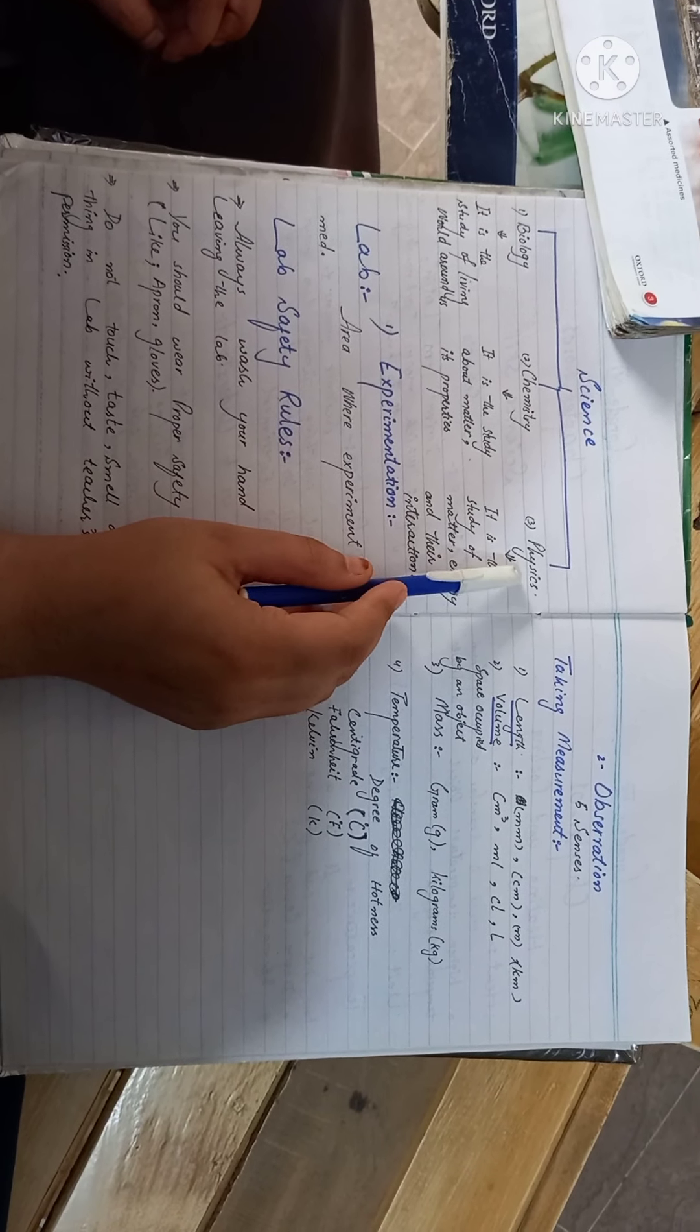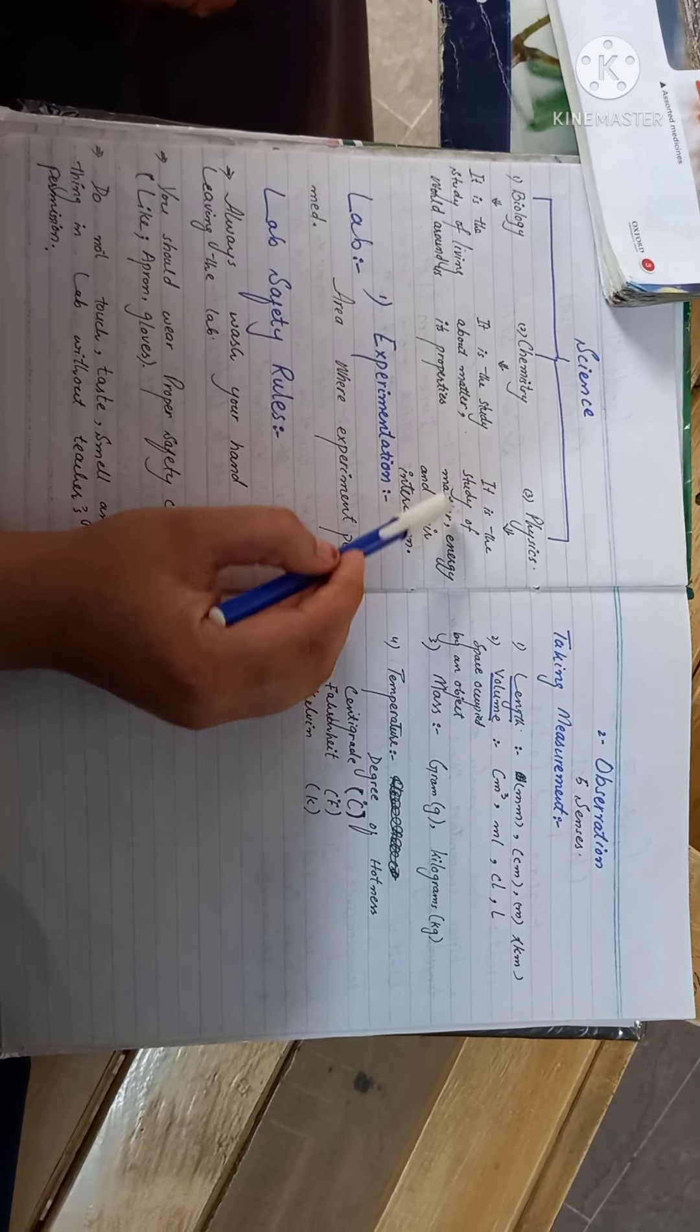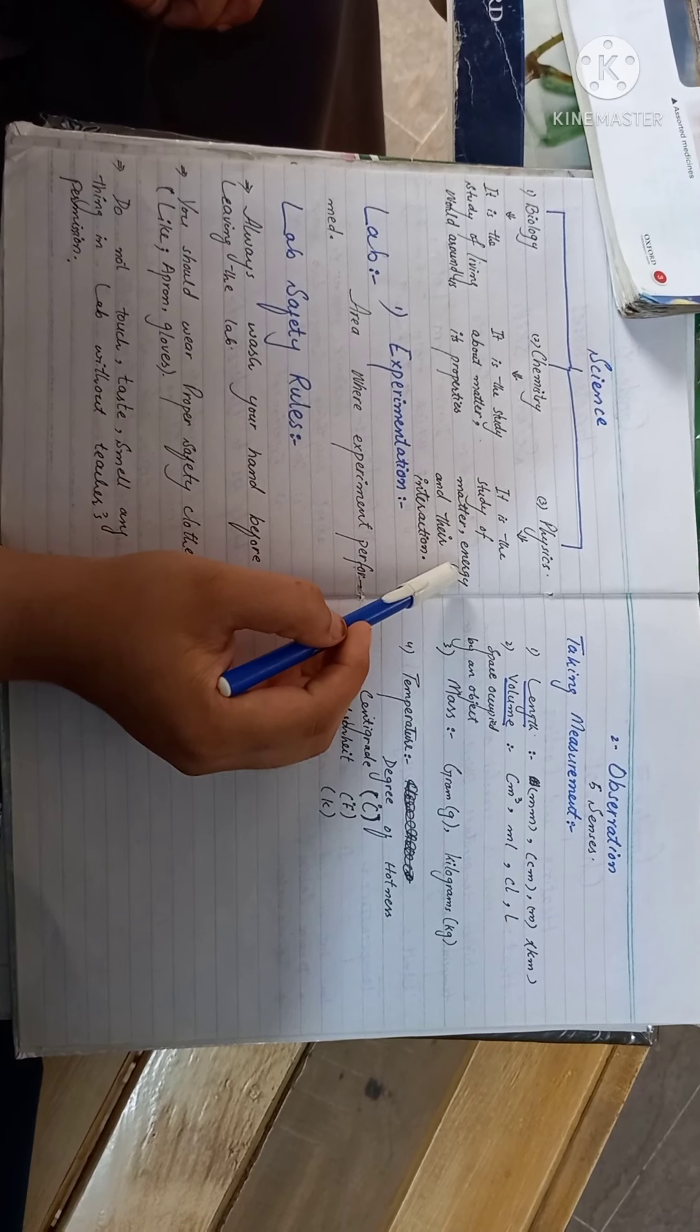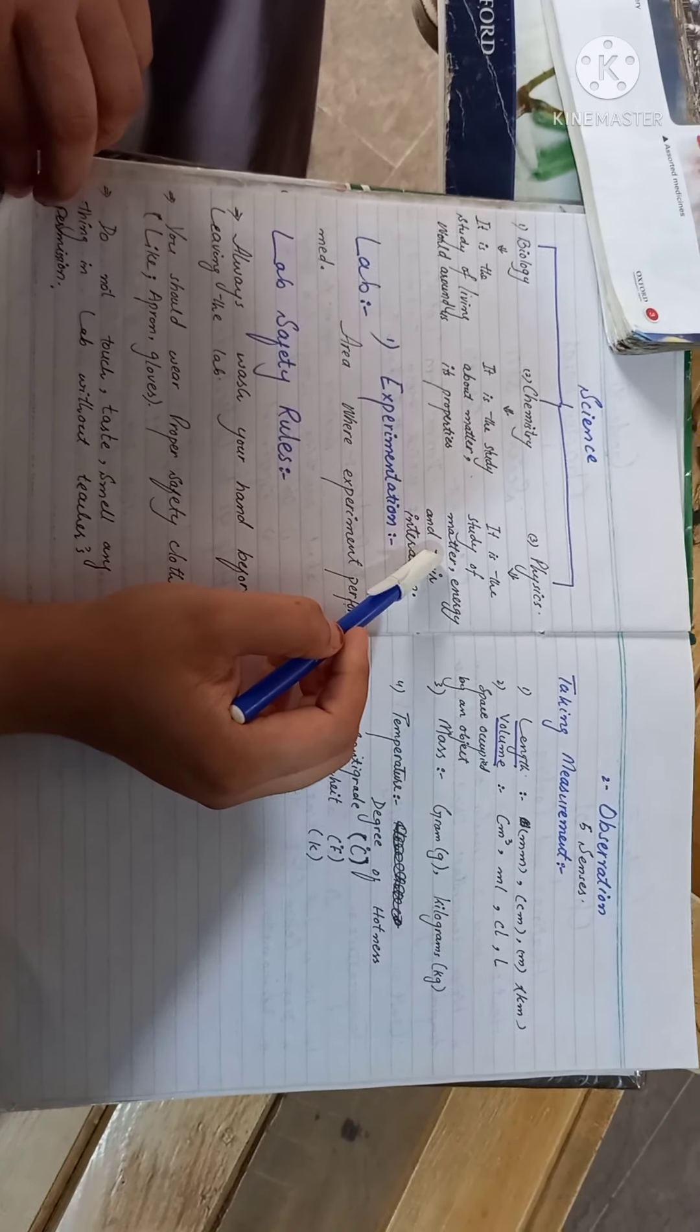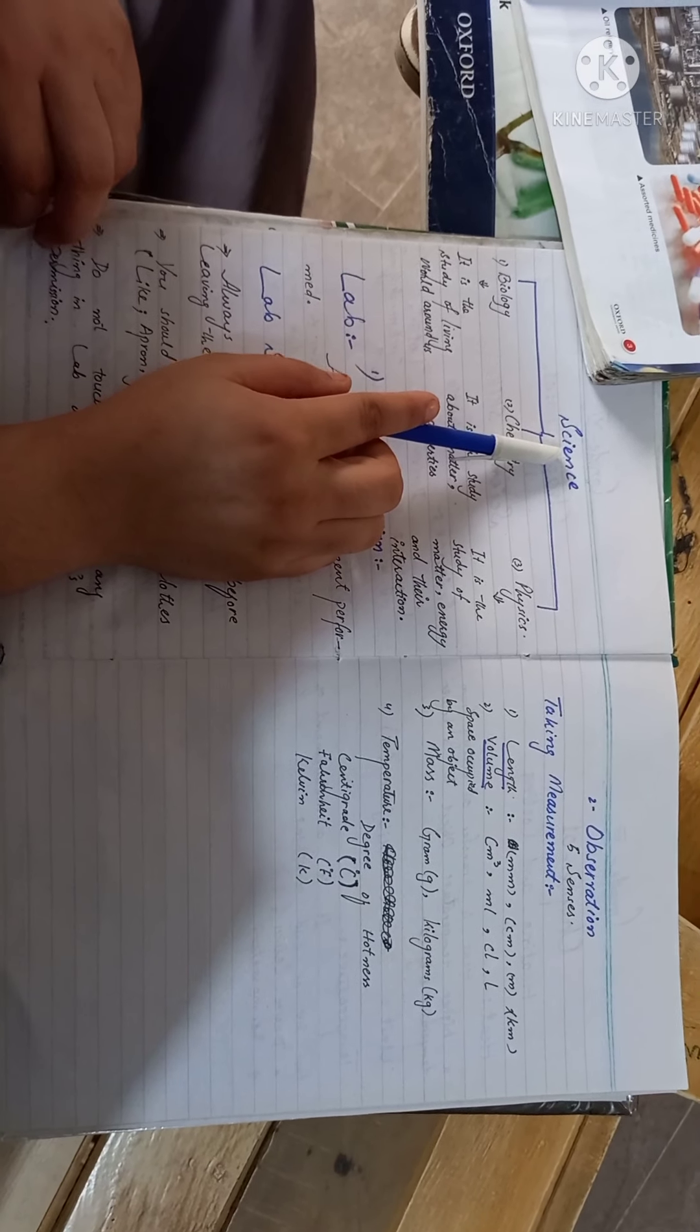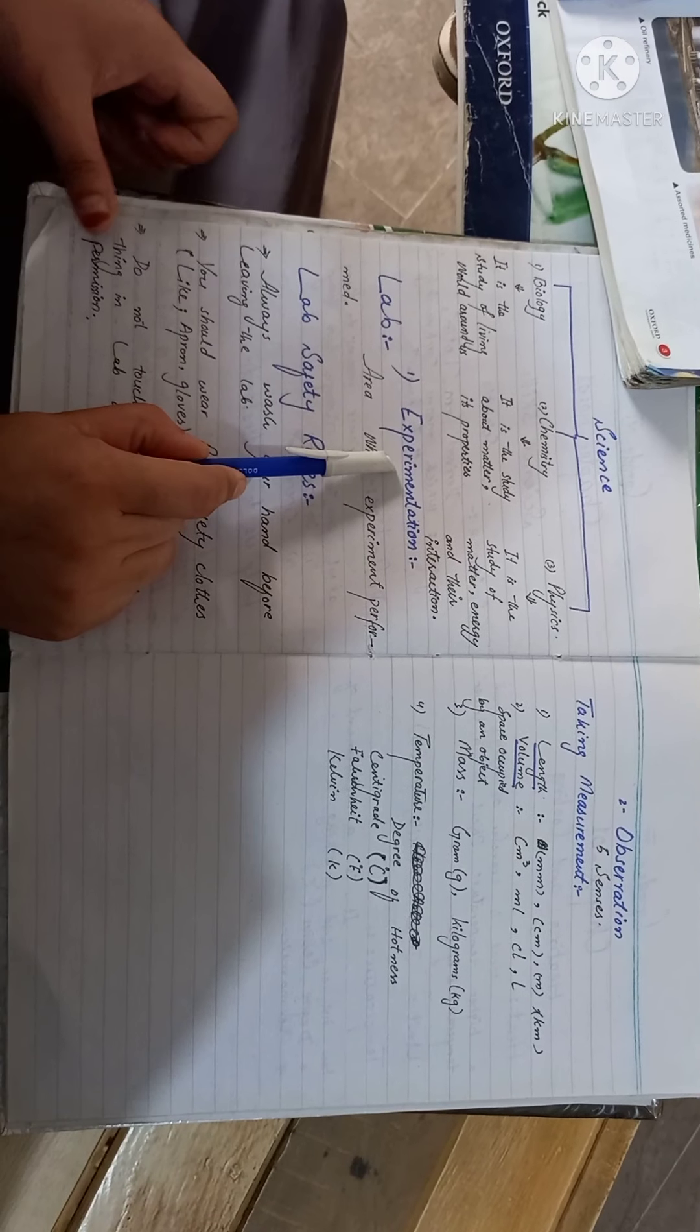The third branch is called physics. Physics deals with matter, now matter is living and non-living. Then it is called connection with energy. Then matter, energy, and its interaction is called physics.